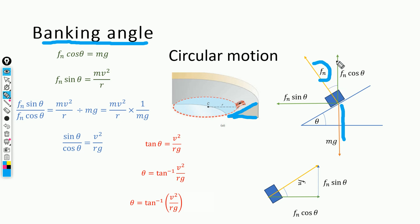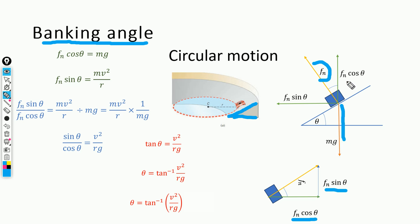Now we resolve the normal force into its components. Drawing this triangle, FN has two components: the vertical component, denoted by FN cos θ, and the horizontal component, denoted by FN sin θ. The vertical component FN cos θ provides a balancing force to the weight of the vehicle, so from the free body diagram: FN cos θ = mg.